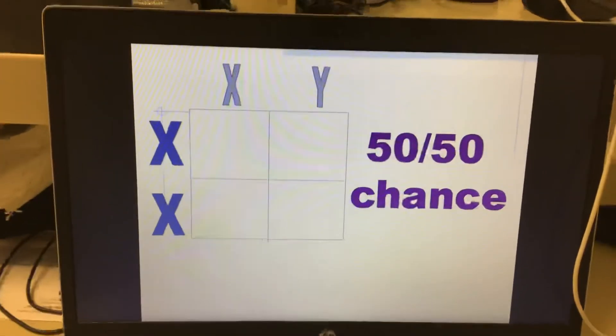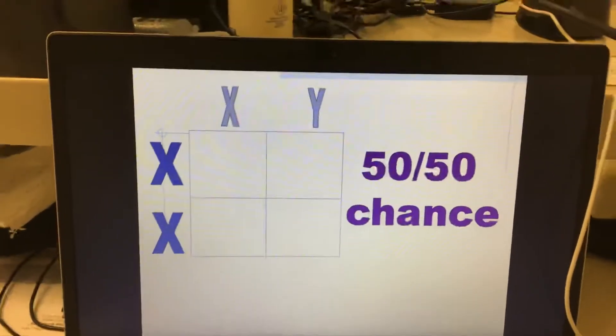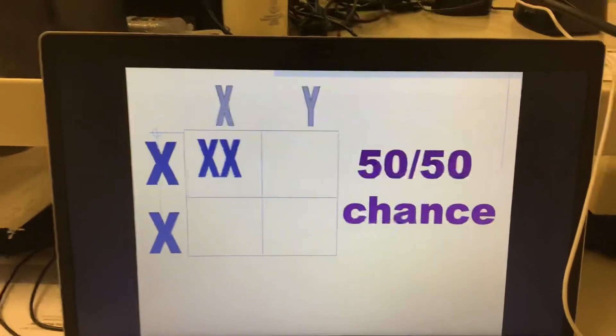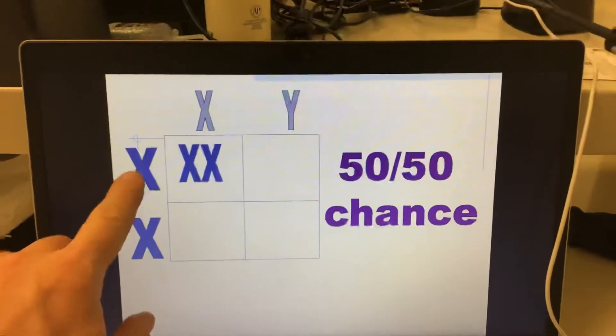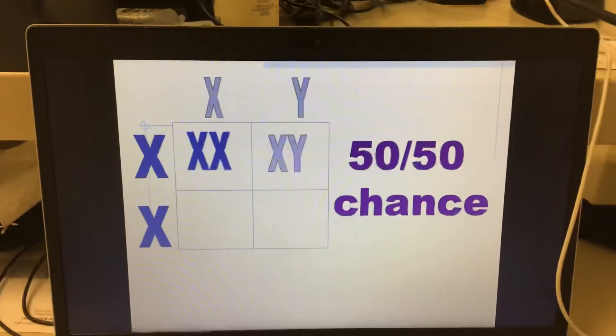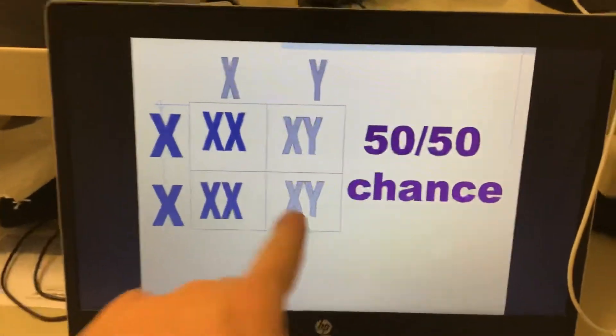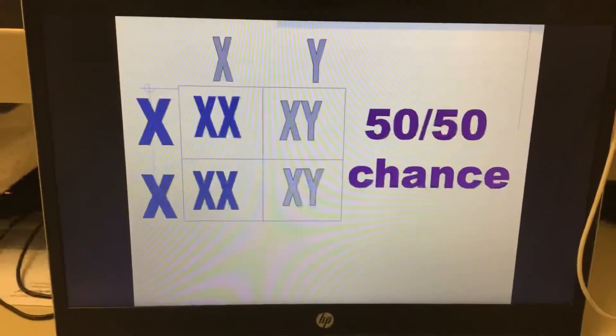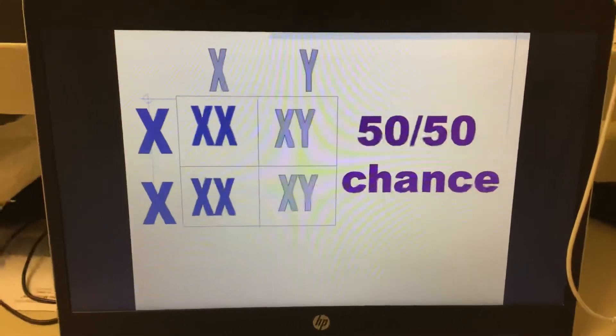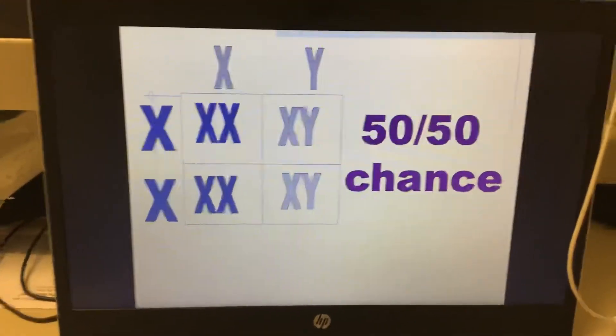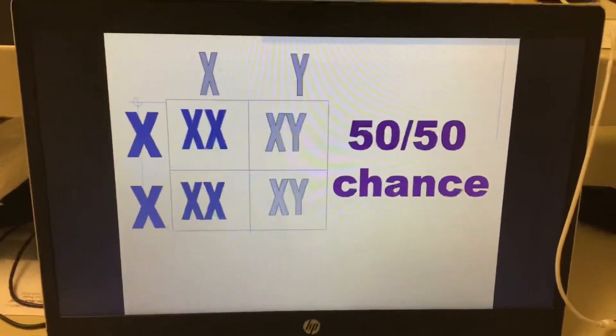If we made a Punnett square out of this, you don't need to write anything here. When we cross this, we'd get a girl, a boy, a girl, and a boy. Or, a two-in-four chance of getting a girl, or a 50% chance, and a two-in-four chance of getting a boy, or a 50% chance.